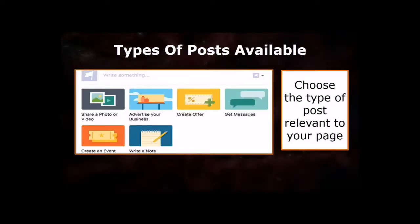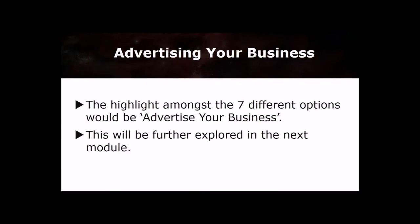As you can see, there are about 7 different options of posts for you to choose from. All you need to do is choose one that is relevant to your page and post at that time and follow the instructions that come with it. You have options like upload photos or video posts, advertise your business, start a live video, direct message, create an event, create an offer, and finally, writing notes. The highlight amongst the 7 different options would be Advertise Your Business, which will be explored further in the next module.